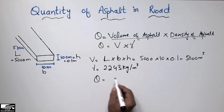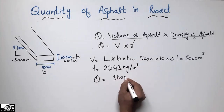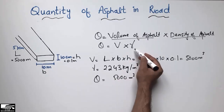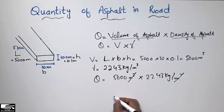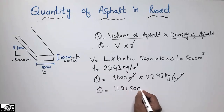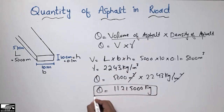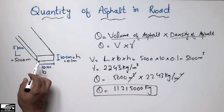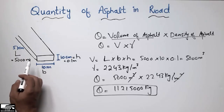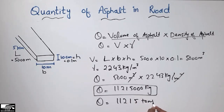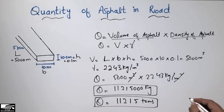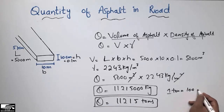By multiplying the two quantities — volume of 5000 cubic meters and density of 2243 kg/m³ — the cubic meter units cancel, giving us a quantity of 11,215,000 kilograms of asphalt. To convert to tons, we divide by 1000, giving 11,215 tons.